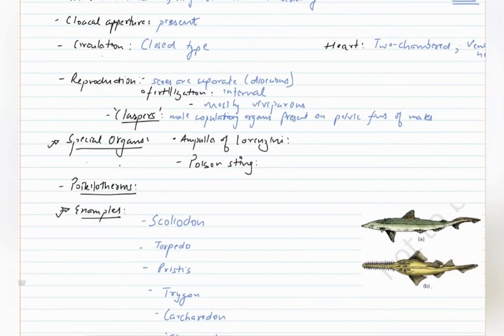Some Chondrichthyes have special organs called Ampulla of Lorenzini which is an electroreceptor. It can also be used to generate electricity and for hunting. Poison sting contains poison for predation which is mainly used to hunt other animals.